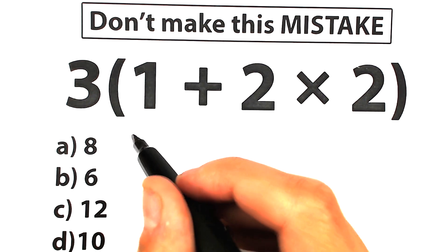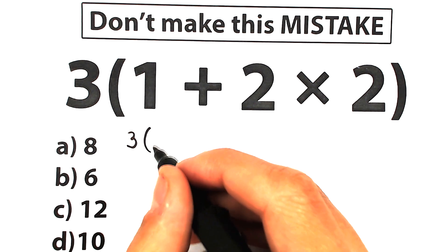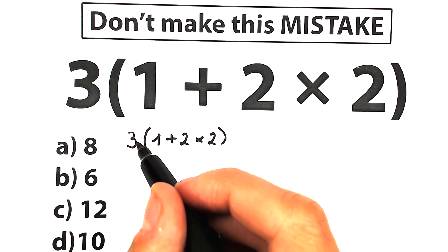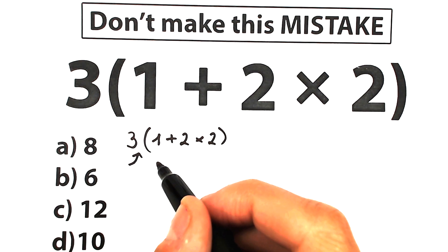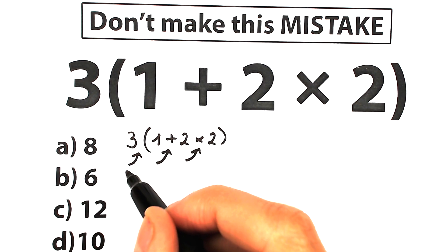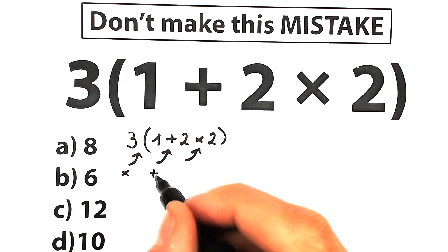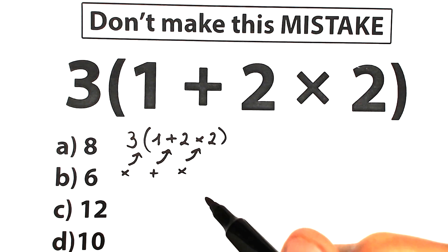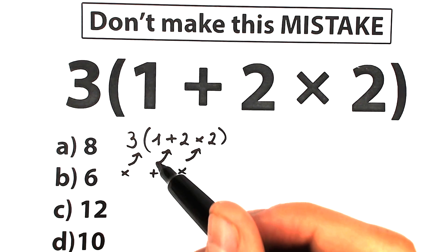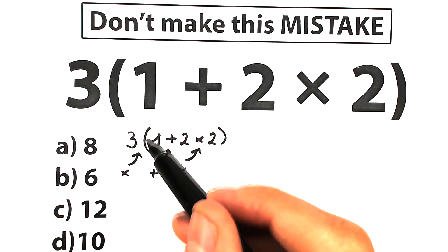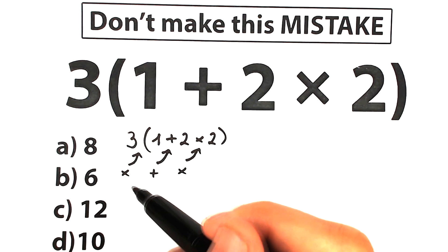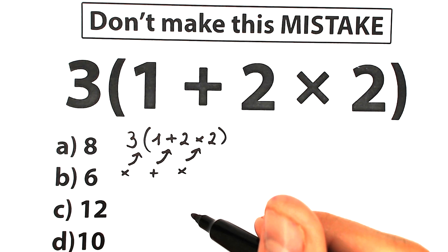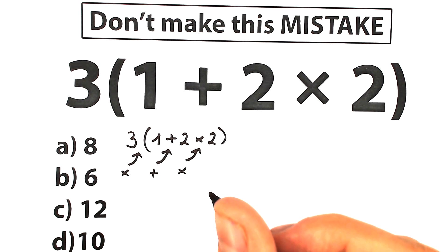So first of all I want to start with this explanation. We have 3, and inside parentheses we have 1 plus 2 times 2. Right now if we look closely, right here we have multiplication before this parenthesis, right here we have addition, and right here we have once more multiplication. So we have 3 math operations: multiplication, addition, and multiplication. And what is the correct order to do this problem? Because we can start with addition, we can start with this multiplication, we can start simplifying this challenge from this multiplication. A lot of combinations, and obviously whatever order of operation we select is going to create a different answer. So we need to understand what is the correct order to do this problem.